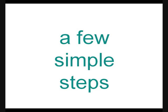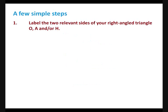And now for a few simple steps using SOHCAHTOA to find a side or an angle. Step 1: label the two relevant sides of your right-angle triangle — O, A, and/or H.